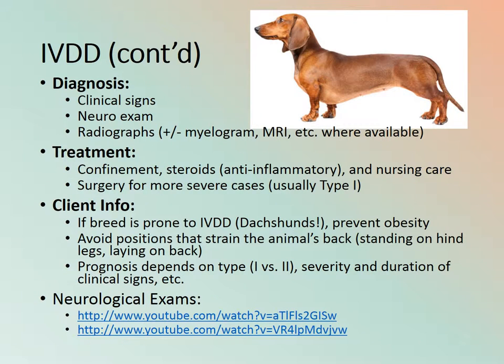Diagnosis is through clinical signs and a neuro exam. Treatment includes confinement, steroids as an anti-inflammatory, nursing care, and surgery in more severe cases. Owners must be educated — especially dachshund owners — early in life about this problem. Prevent obesity, avoid positions that strain the animal's back. Prognosis depends on whether it's acute or chronic and the severity and duration of clinical signs.